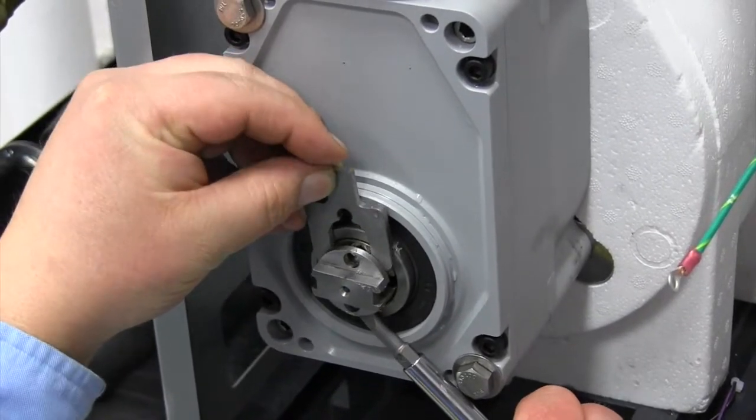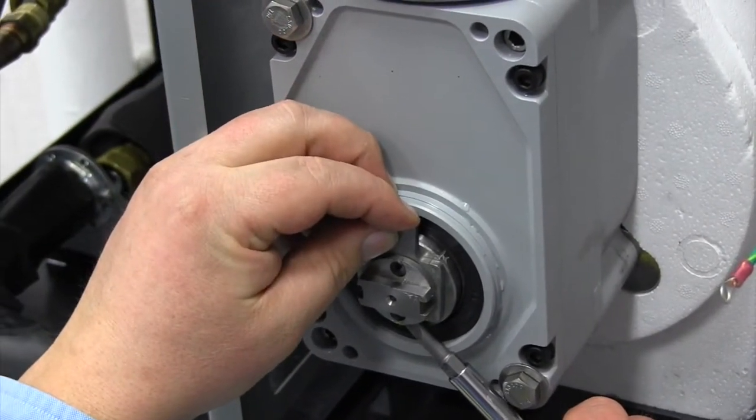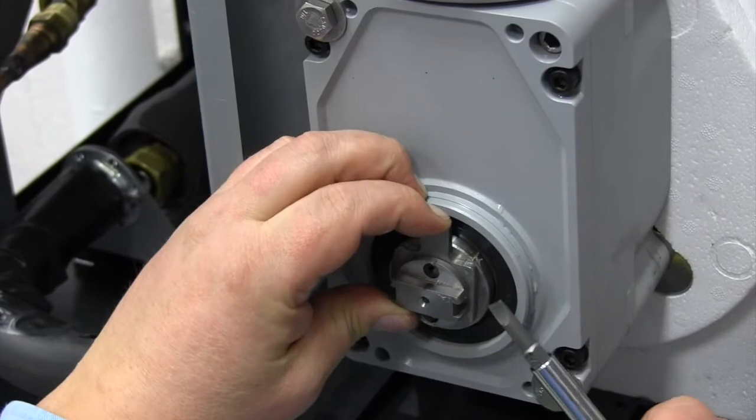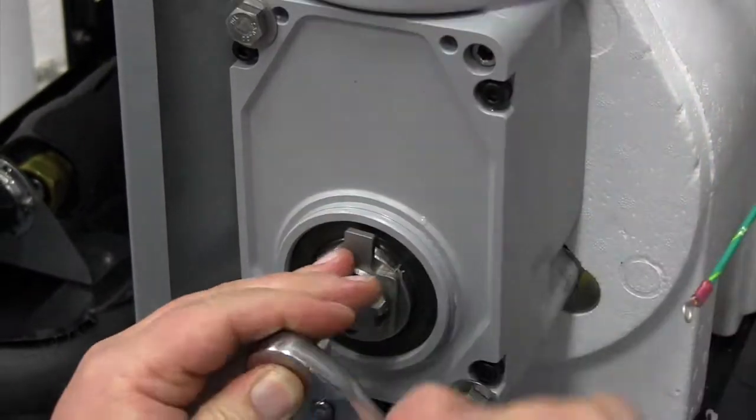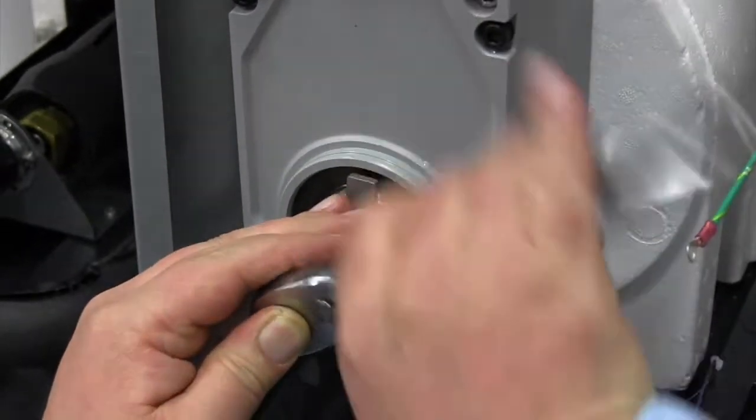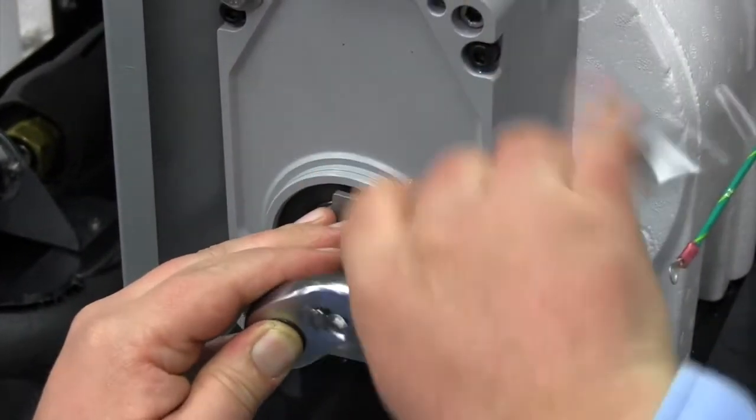You're going to slide the auger slightly forward so your fork slides in. You're going to line up that notch with the screw hole. Now we're going to install the two stainless steel bolts that hold that fork.